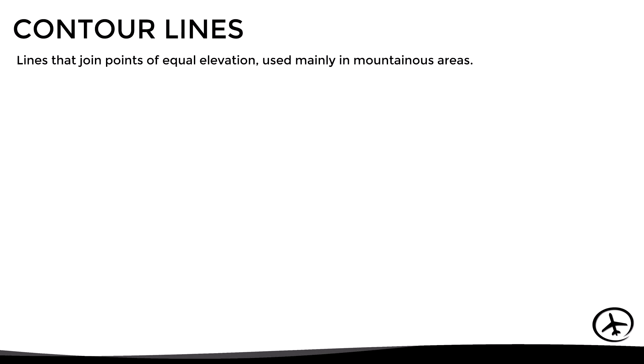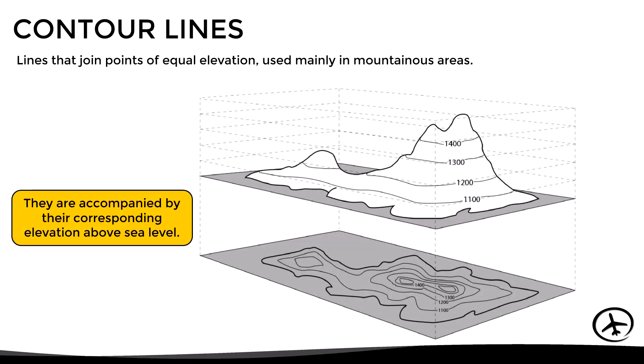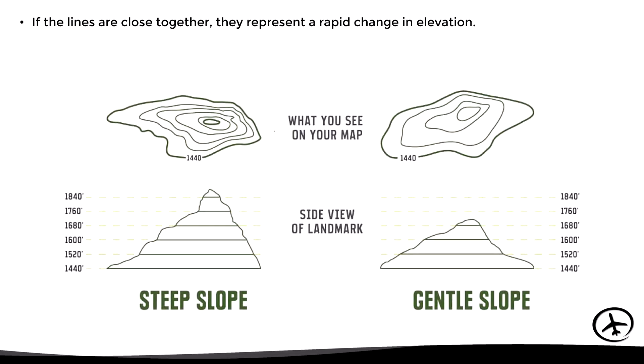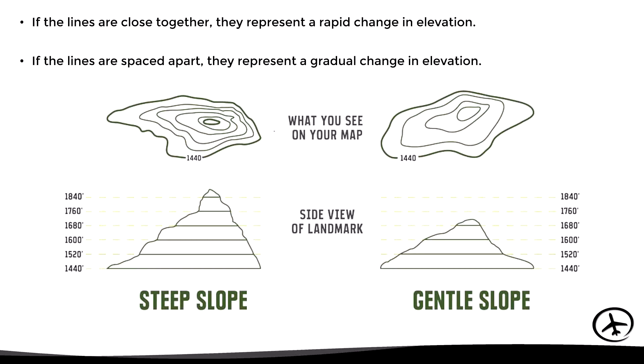Another way to represent terrain features on a chart is by using contour lines. These are lines that join points at equal elevation and are used mainly in mountainous areas. Each contour line is accompanied by its corresponding elevation above sea level, and we can appreciate how a 3D figure is converted into a 2D representation. If the lines are close together they represent a rapid change in elevation, while if the lines are spaced apart they represent a gradual change in elevation and a more gentle slope.